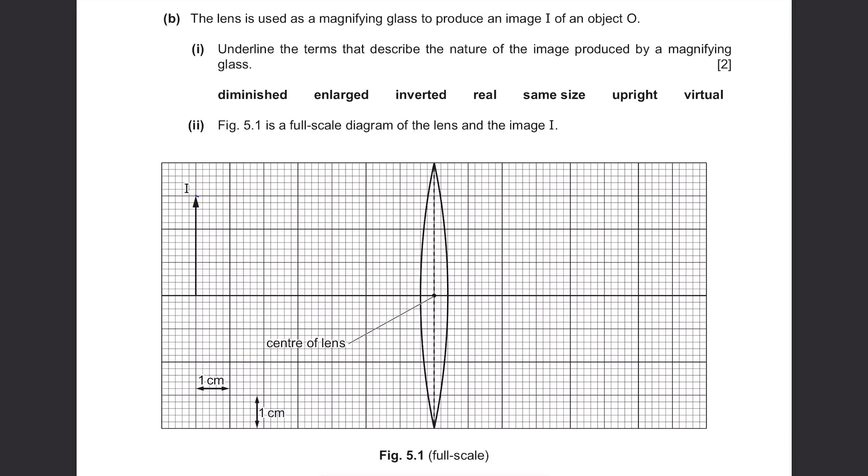Part B. The lens is used as a magnifying glass to produce an image I of an object O. Underline the terms that describe the nature of the image produced by a magnifying glass. When you use a magnifying glass, the image gets bigger so it's enlarged and it is not inverted, it's not real, it's actually virtual. Not the same size and yeah, it's upright and it's virtual image.